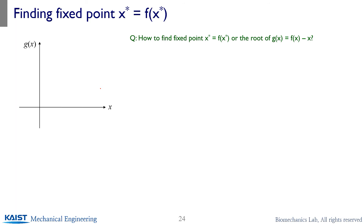Your ultimate goal for general locomotion analysis will be finding a fixed point. The rimless wheel is a simple case solvable by hand, but most cases require trial-and-error by many repeated iterations. So either find the solution for f(x) = x, or define a function g(x) = f(x) − x and find the root of g(x) = 0. That's the fixed point.